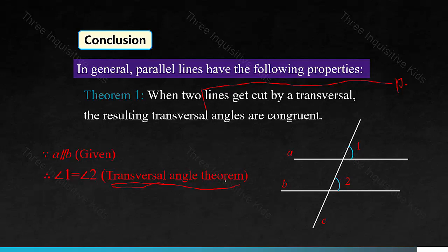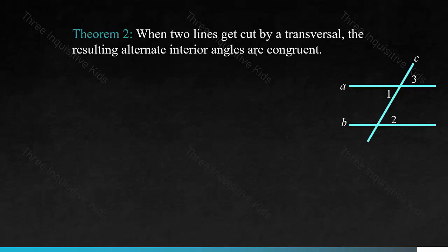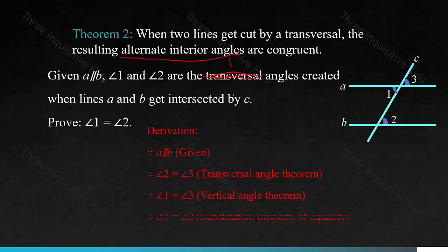Theorem 2: when two parallel lines get cut by a transversal, the resulting alternate interior angles are congruent. That's the alternate interior angle theorem in reverse. Given A is parallel to B, angle 1 and angle 2 are the alternate interior angles created when lines A and B get intersected by C. Prove angle 1 equals angle 2. Because A is parallel to B, therefore angle 2 equals angle 3 — that's the transversal angle theorem. Because angle 1 equals angle 3 — that's the vertical angle theorem — therefore angle 1 equals angle 2, using the substitution property of equality.